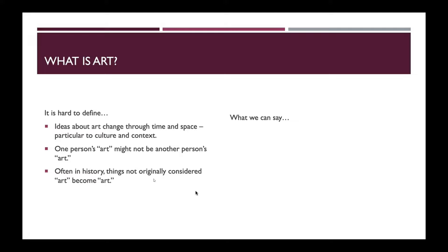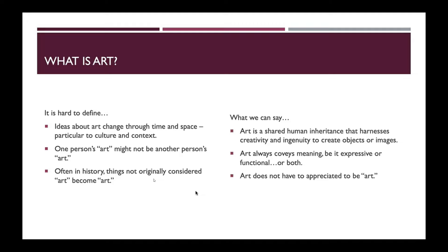The last point of why art is so hard to define is that often in art history and in history in general, things originally created within a culture and context might not have been considered art to begin with, but then later on became appreciated as art — once again showing how unstable those terms are. But what can we say? Art is a shared human inheritance that harnesses creativity and ingenuity to create objects or images. Art always conveys meaning because it is created by humans who come from a particular culture, history, and ideology. That meaning can be expressive — visualizing something in material — or it can be functional, or both.